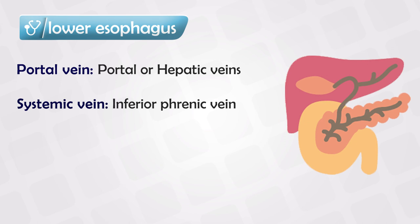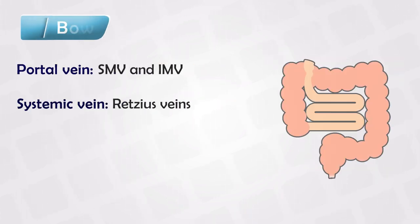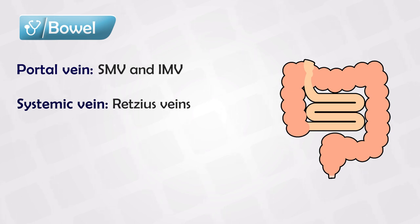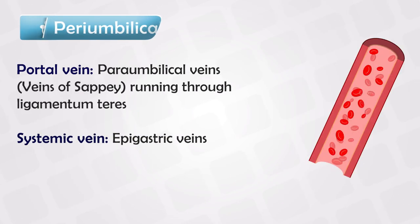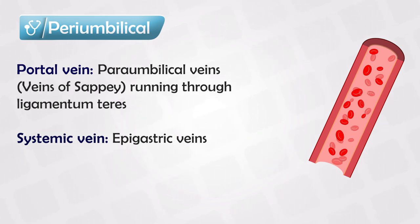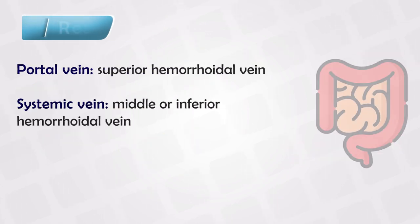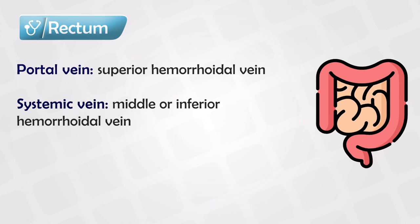Next is the portal or hepatic veins, which connect to the inferior phrenic veins. Next is the superior mesenteric or inferior mesenteric veins that connect to the right gastric veins. Next are the para-umbilical veins, known as veins of Sappey, running through the ligamentum teres, connecting to the epigastric veins. And finally, the superior hemorrhoidal veins, which connect with the middle or inferior hemorrhoidal veins.